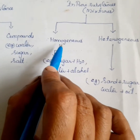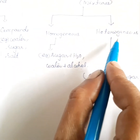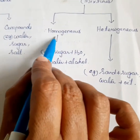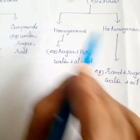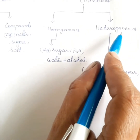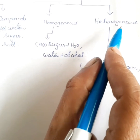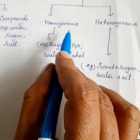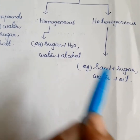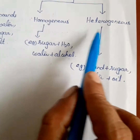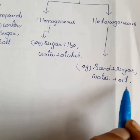A homogeneous mixture has a uniform composition throughout its mass, whereas a heterogeneous mixture does not have a uniform composition throughout its mass. Examples of homogeneous mixtures are sugar plus water and water plus alcohol. Examples of heterogeneous mixtures are sand plus sugar and water plus oil.